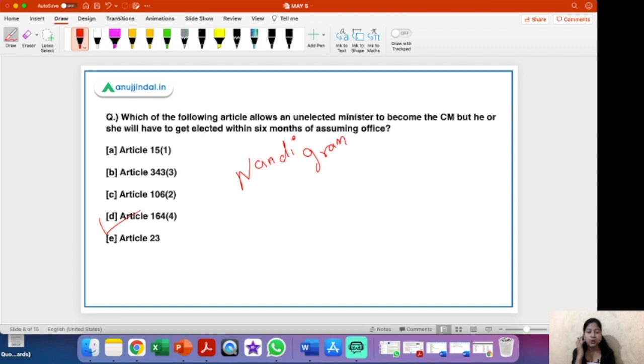But how is this possible? This is given in Article 164 sub-clause 4 of the constitution. And remember the time period that has been given to that unelected person to become elected again, that is the six months tenure of assuming the office. If the person fails to get elected within this time period, then he or she will cease to be a minister. So that is the condition.